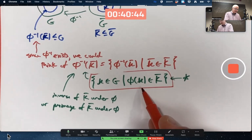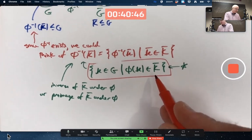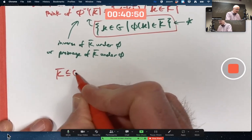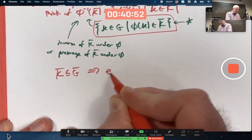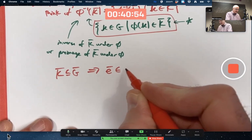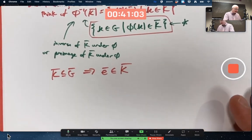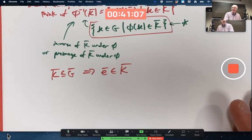Well, K bar being a subgroup of G bar means that it's got the identity of G bar. Call it E bar. Is there an element in G that gets mapped to it? Sure. E. We know G is a group that's got an identity E and we know that isomorphisms map the identity to the identity.